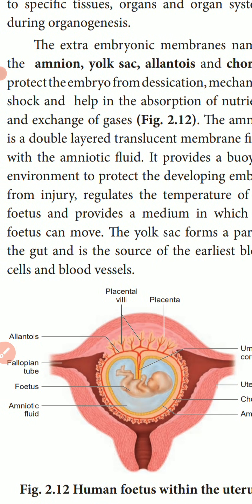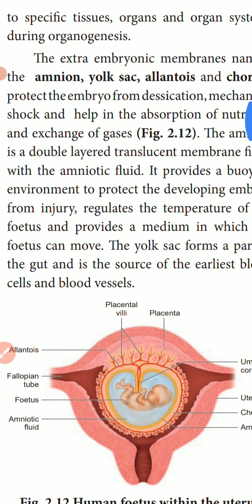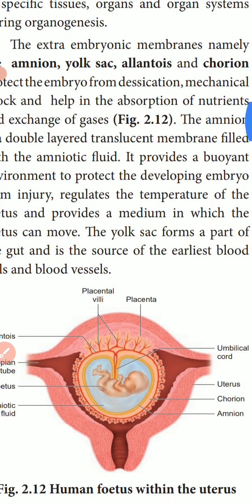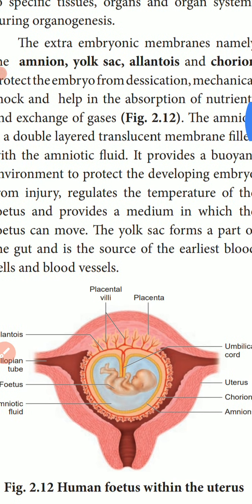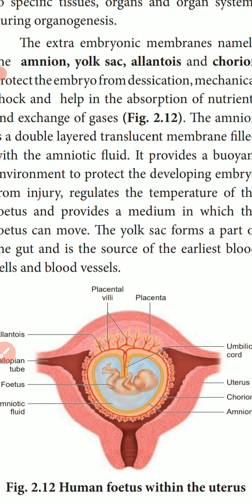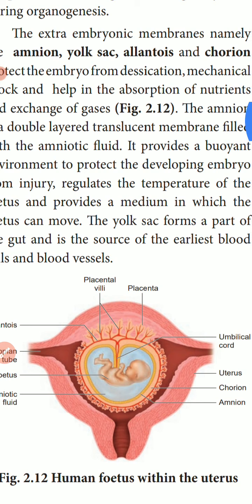What are the uses of the amniotic fluid? It provides a buoyant environment to protect the developing embryo from injury. This fluid acts as a cushion-like structure — when the child moves, it doesn't get injured. It also regulates body temperature of the fetus and provides a medium in which the fetus can move.